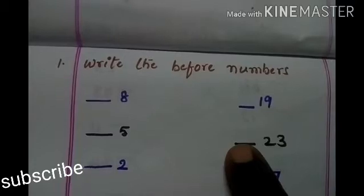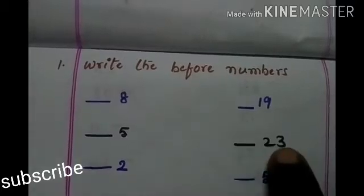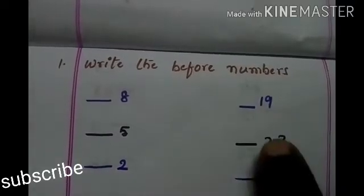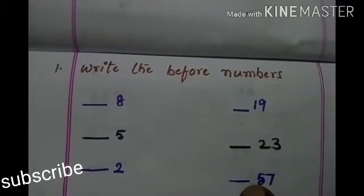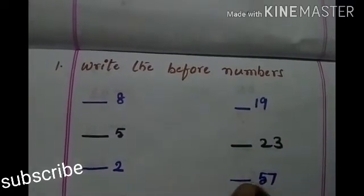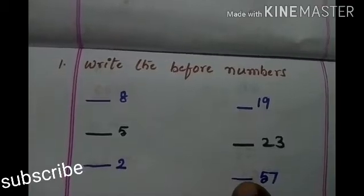Here 2 we will write commonly and before 3, what comes? 2. Next, 57 — what comes? 56.